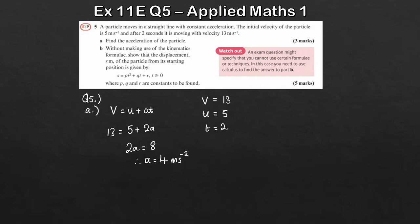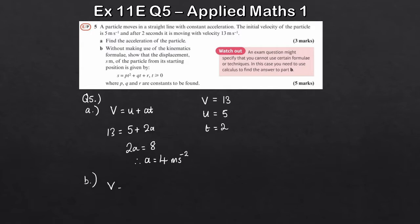For part b we're told not to use kinematics formulas, so we have to use calculus. We want the velocity first, and then once we've got the velocity we can integrate again to get the displacement — because we want to show that the displacement can be given by a quadratic. So to do that we integrate the acceleration, and then integrate the velocity.